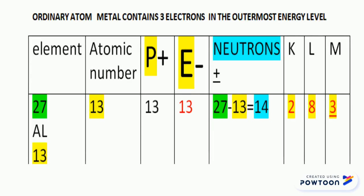The last thing we have to know from this table is the electron configuration. We have three energy levels here: K, L, and M. K is filled with 2 electrons, L with 8, and M with 3. Thank you.